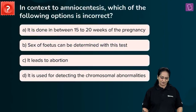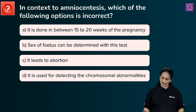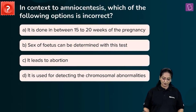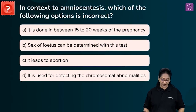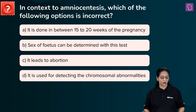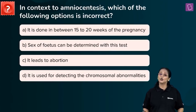Let's look at this question. In context to amniocentesis, which of the following option is incorrect? A. It is done between 15 to 20 weeks of pregnancy. B. Sex of fetus can be determined with this test. C. It leads to abortion. D. It is used for detecting chromosomal abnormalities.